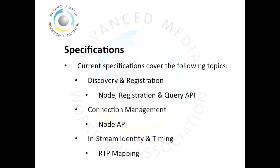The specifications as they exist today cover three main topics: discovery and registration, connection management, and in-stream identity and timing. For discovery and registration, the relevant specifications are the Node, Registration and Query APIs. For connection management it's the Node API, and for in-stream identity and timing, at present it's the RTP mapping, although other transports may be used in the future.